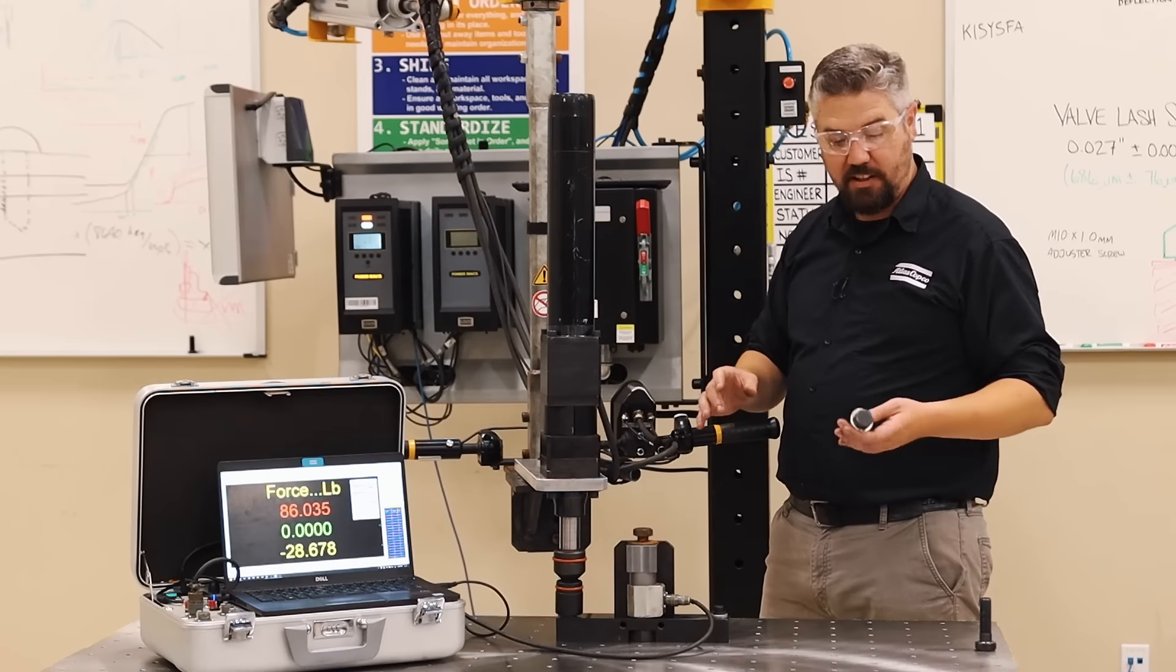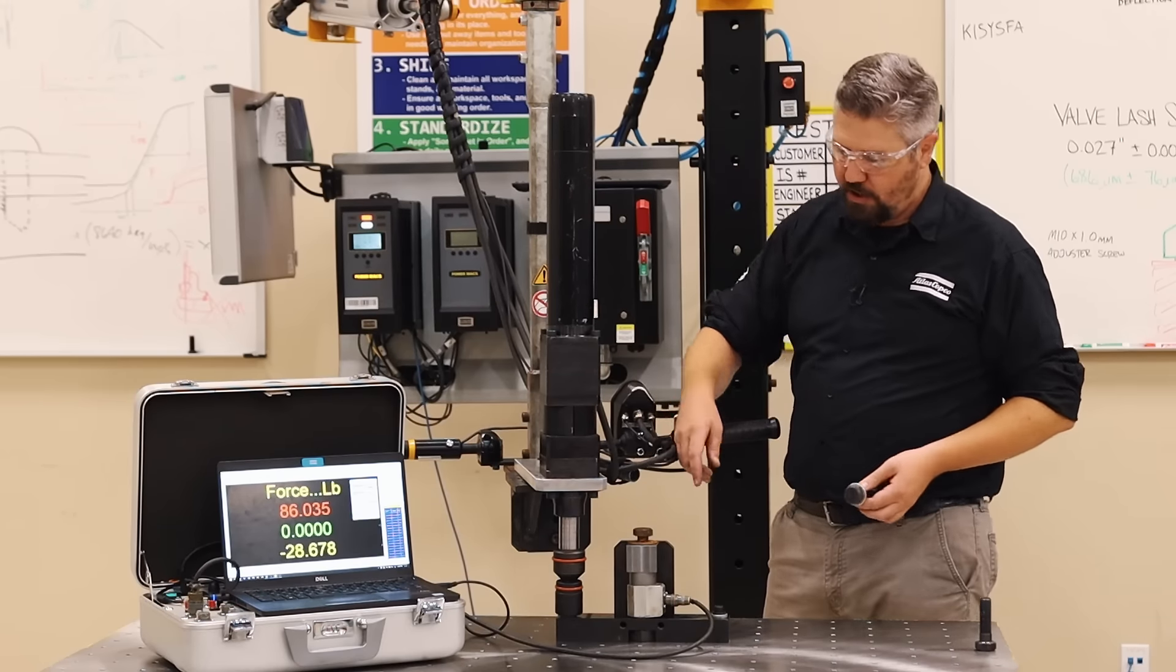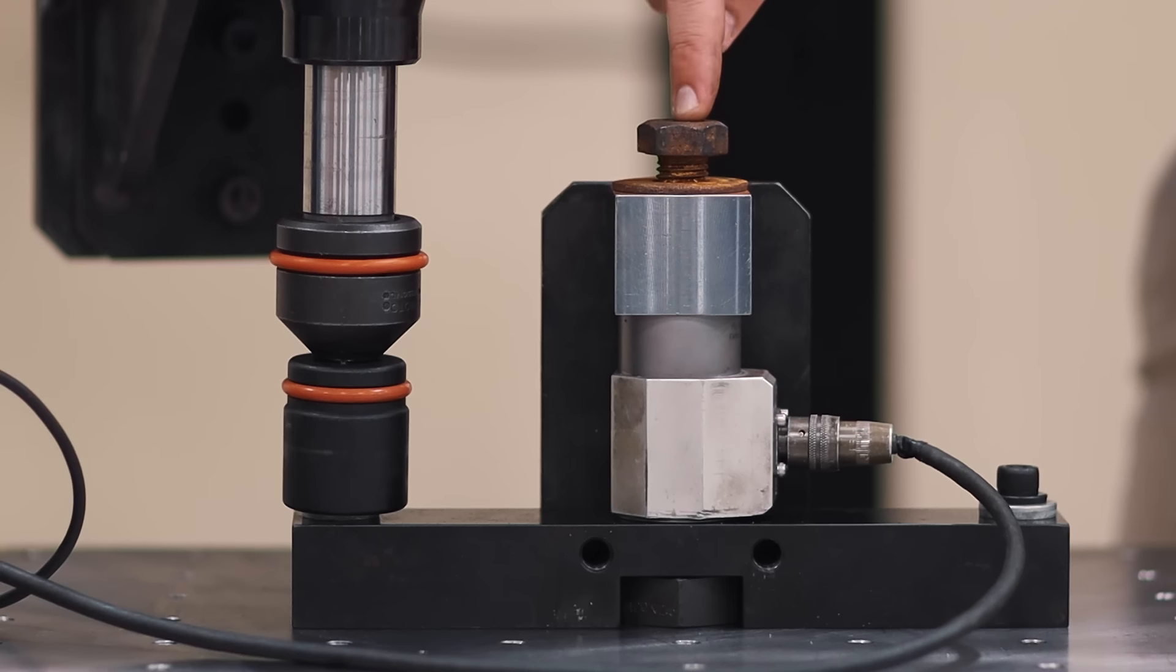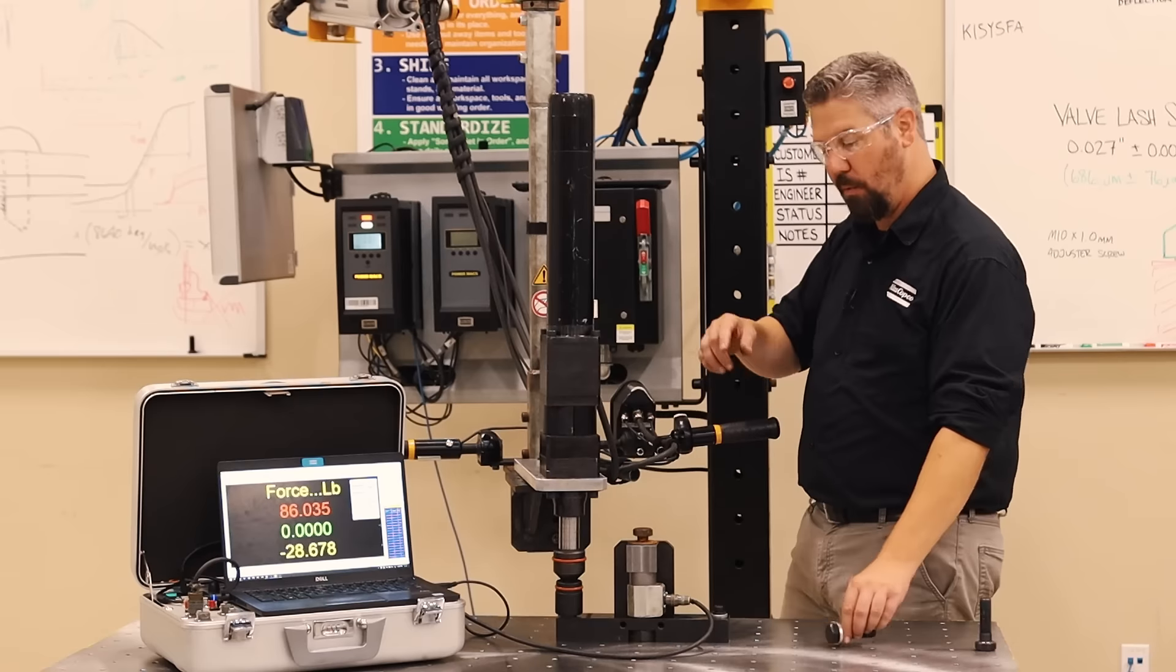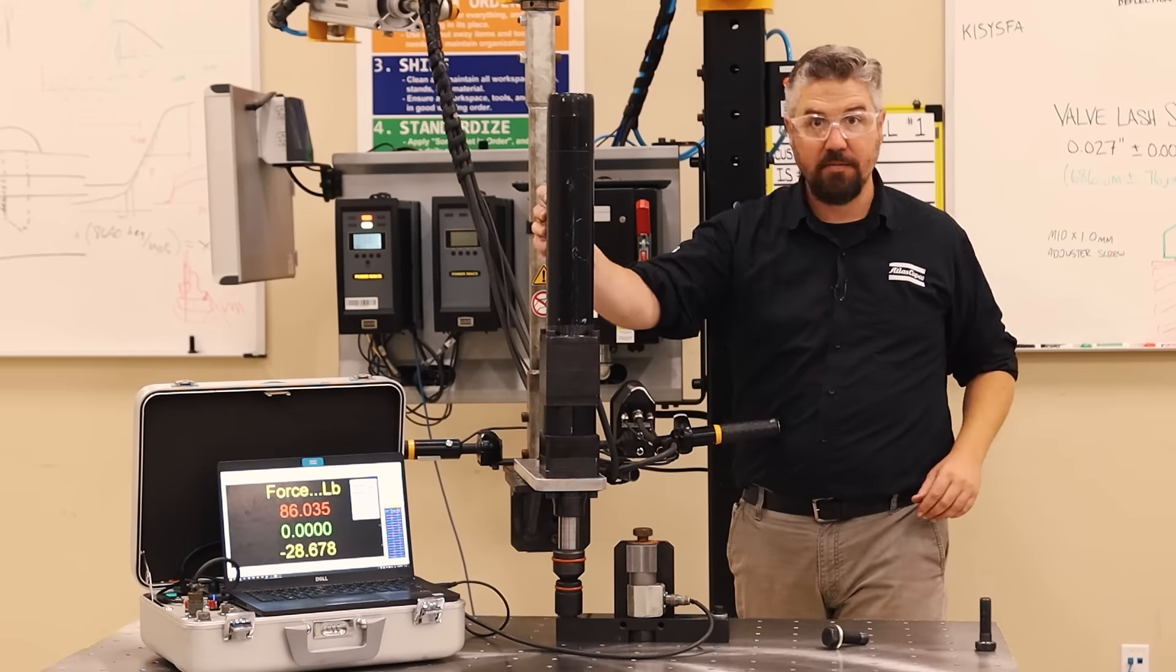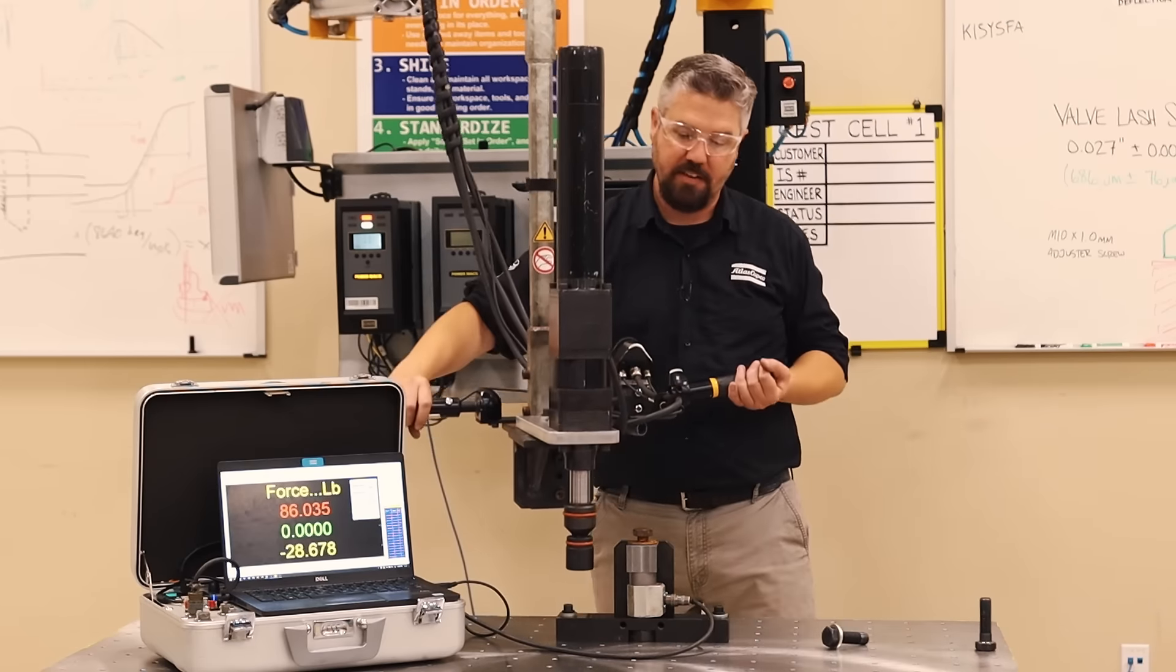Alright, so we established the baseline clamping force of a new bolt. We're going to see if the rusty surfaces on this bolt create more friction and lower the clamping force when we tighten it down. We're going to put the same 500 Newton meters of torque on this bolt.